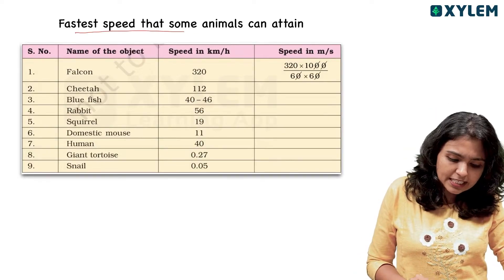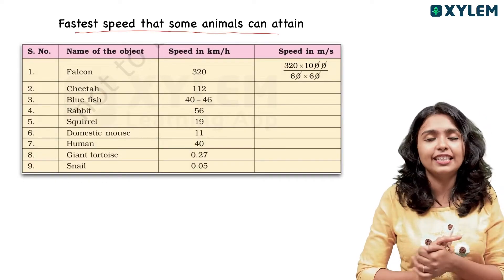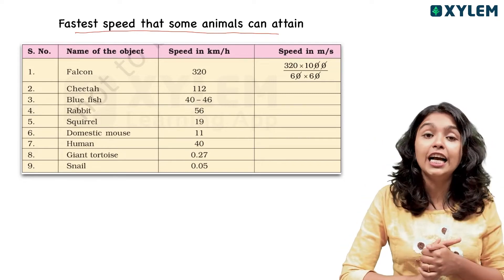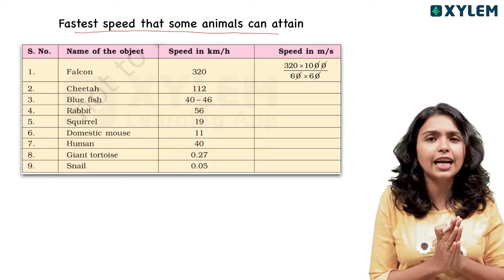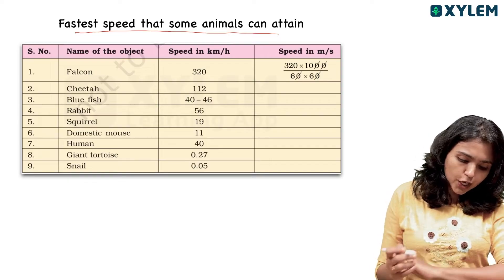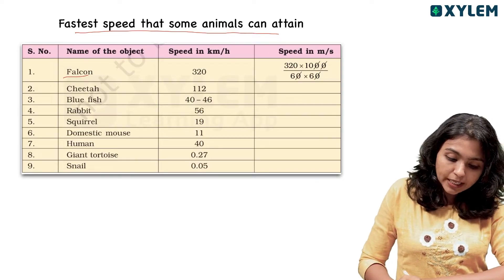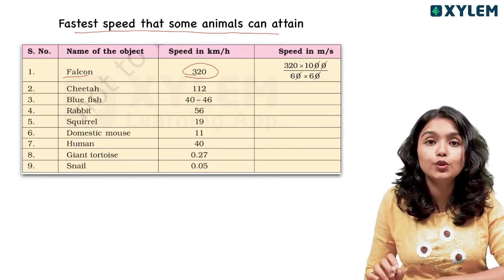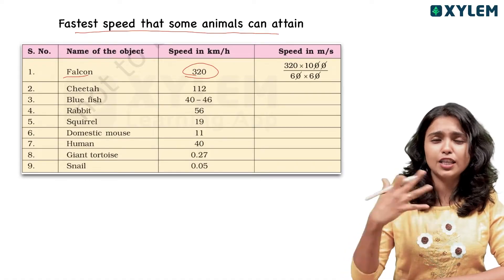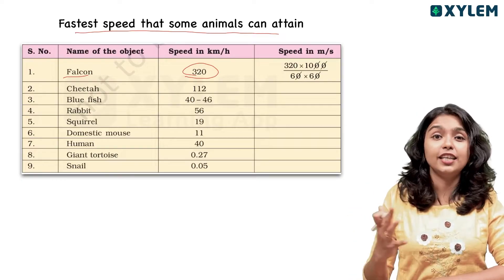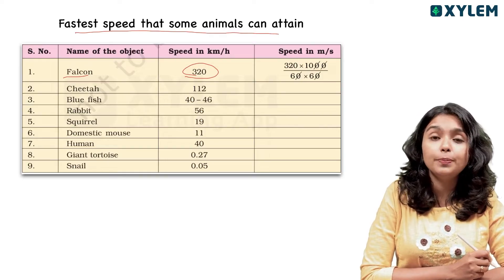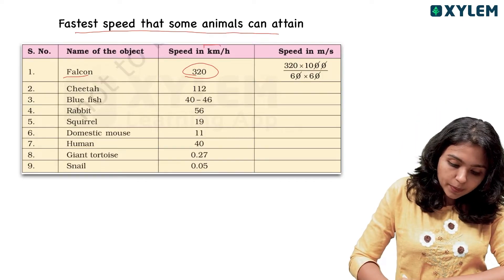If you look at the fastest speed that some animals can attain, you can see various species listed with their speeds. That speed, as we mentioned, is measured in kilometer per hour. This is kilometer per hour. We also say meter per second.